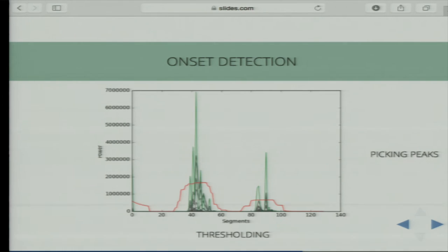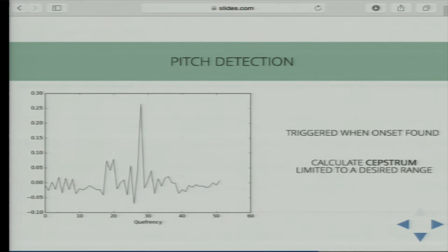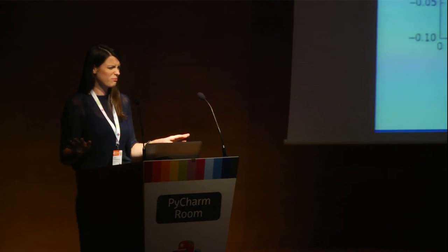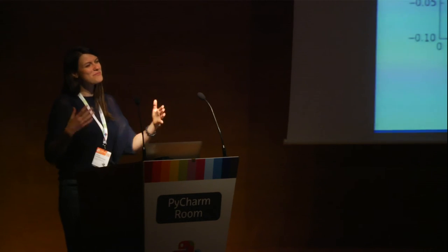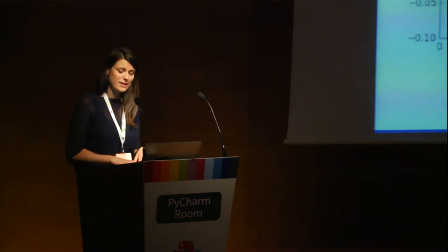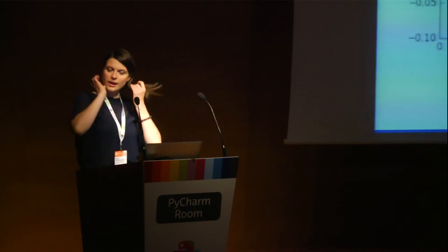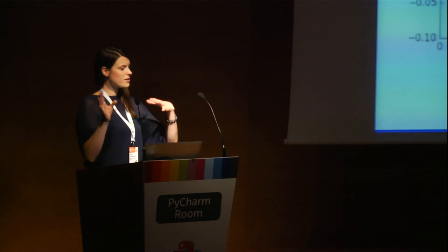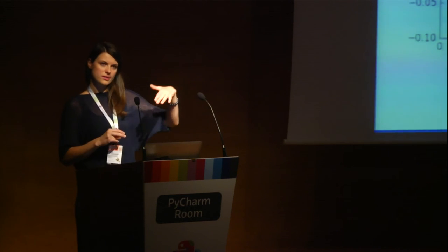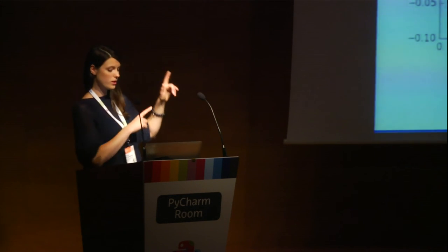We've picked the significant peaks. Now we want to find what pitch those notes had. We do this by calculating the cepstrum of the signal. The cepstrum is the inverse Fourier transform of the logarithm of the calculated spectrum — essentially a spectrum of a spectrum. You can think of it as information about the rate of change, correlated with time. Since frequency equals one over the time of a single cycle, the high frequencies have shorter time cycles and appear at the beginning of the cepstral domain, while lower frequencies appear at the end.